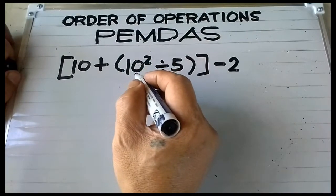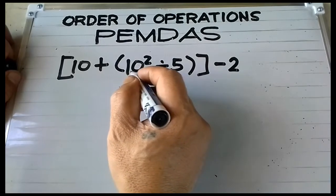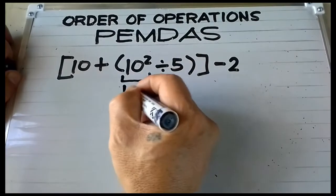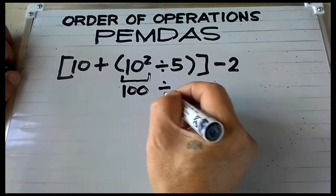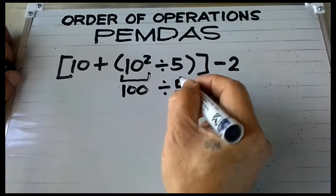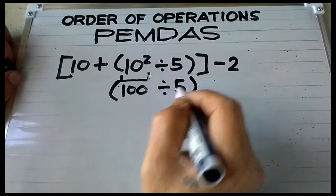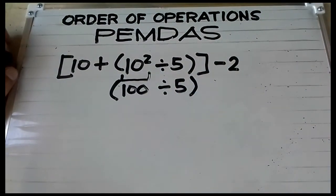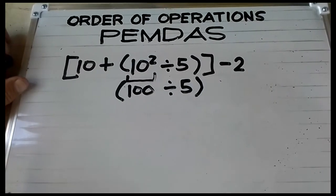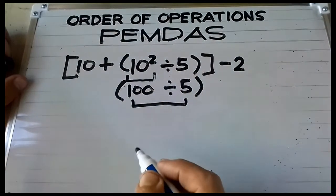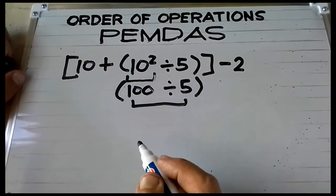Inside the parenthesis we have 10 squared: 10 times 10 is equal to 100. Rewrite division and 5. Now we have parenthesis again — parenthesis always comes first — so 100 divided by 5 is equal to 20.